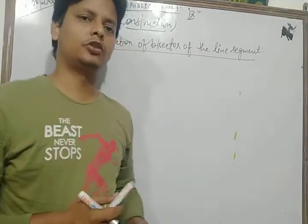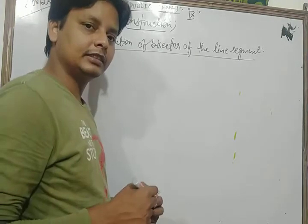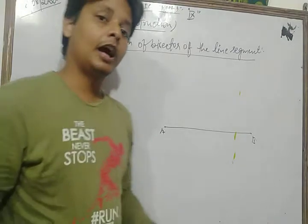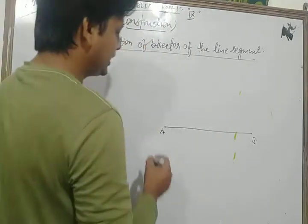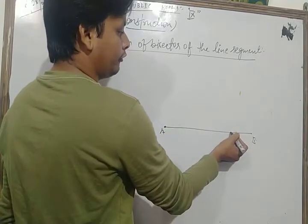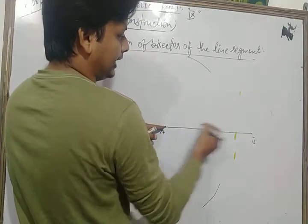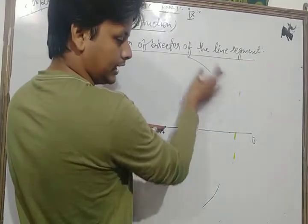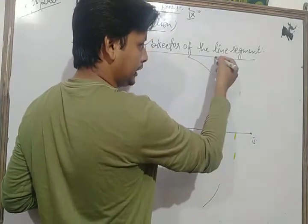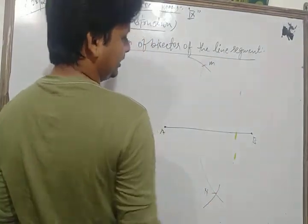You are already aware of this topic. For the perpendicular bisector of a line segment AB, first draw the given line segment AB. Then taking A as center and a distance equal to more than half of AB, cut arcs on each side of the line segment AB. Taking B as center and the same radius, cut arcs that intersect the previous arcs at two distinct points M and N.